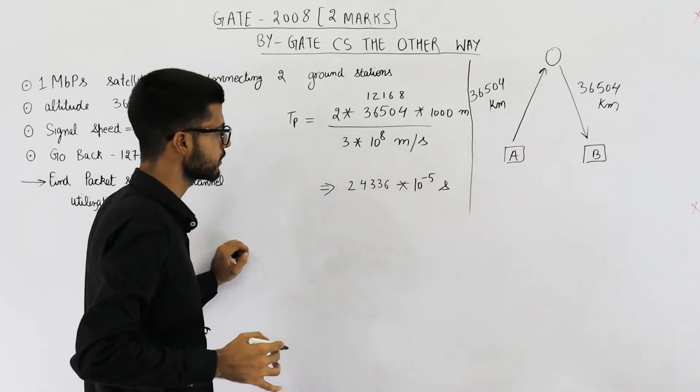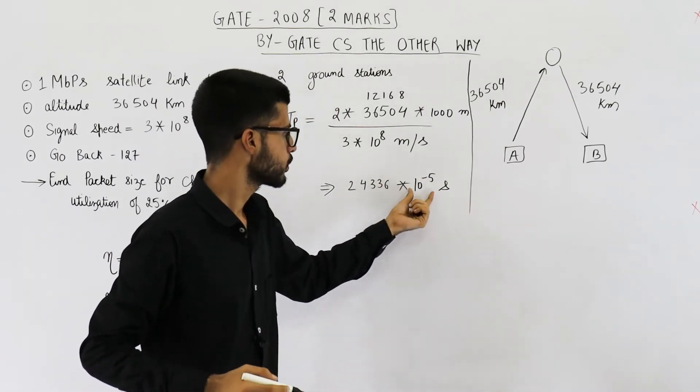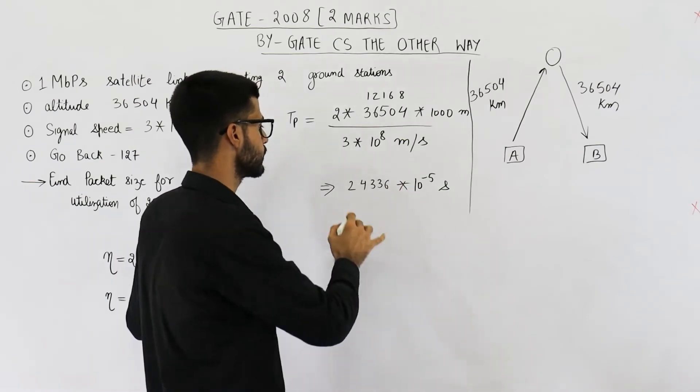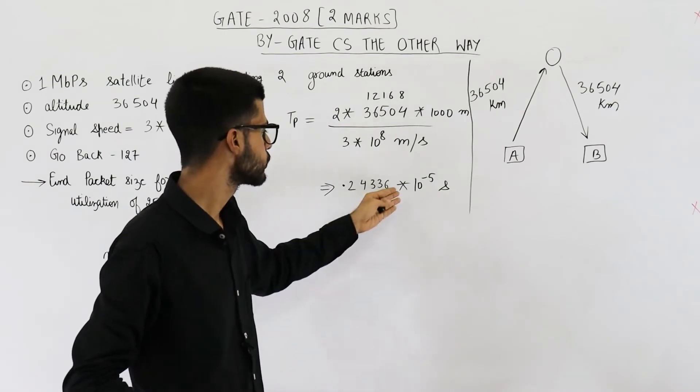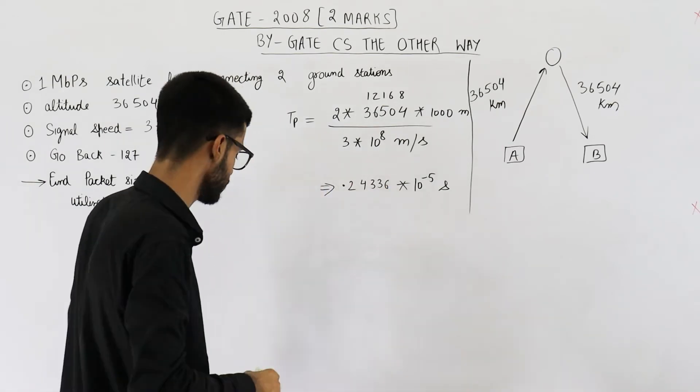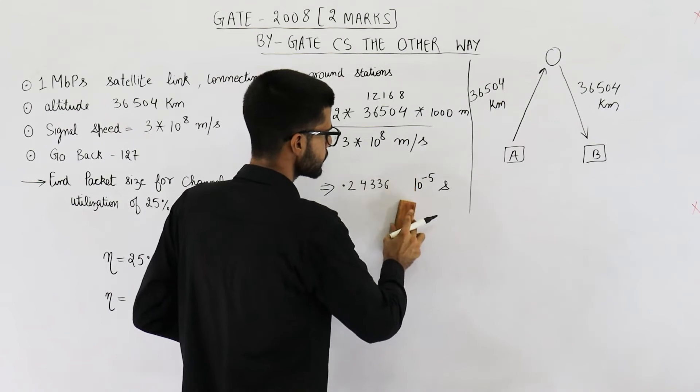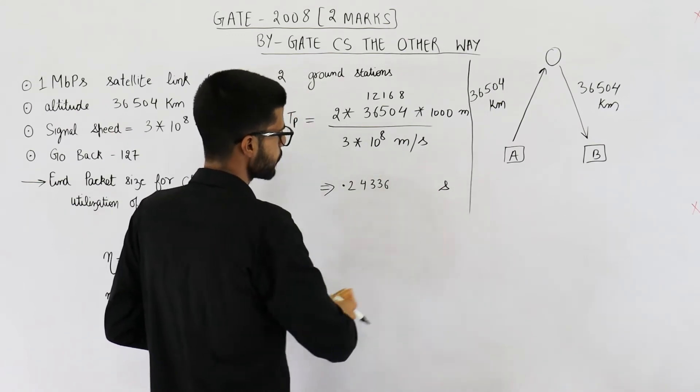Now you can see 10 raised to the power minus 5 can be resolved by shifting decimal. So we will shift the decimal to left. That means it is 0.24 seconds approximately.